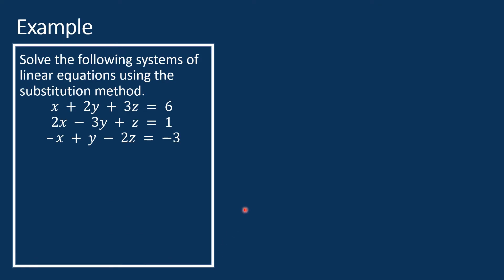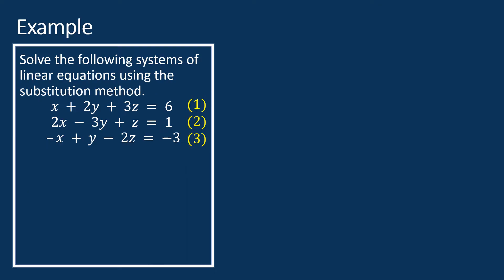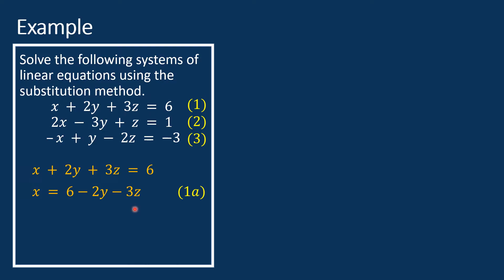Let's see this example. Solve the following system of equations using the substitution method. The three equations are: x plus 2y plus 3z equals 6 (equation 1), 2x minus 3y plus z equals 1 (equation 2), and negative x plus y minus 2z equals negative 3 (equation 3). First, solve one of the equations for one of the variables. Let's solve equation 1 for x: we get x equals 6 minus 2y minus 3z. Let's call this equation 1a.